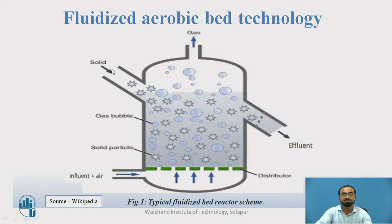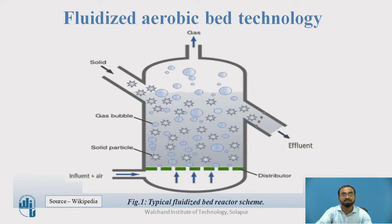The solids — the bioparticles or the media — are made to come inside the bioreactor. Automatically, whatever gases are produced, like carbon dioxide or methane, are taken out from the top. As the treatment goes on, the media is continuously in suspension. If we are providing media with large surface area, the biodegradation or metabolism process takes place at a faster rate. Therefore, the organic matter can be easily degraded with a lesser HRT or lesser detention time, giving out a lesser HRT. The efficiency is also higher because the large surface area of the bioparticles always gives a higher rate of degradation.